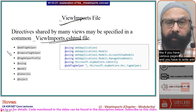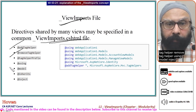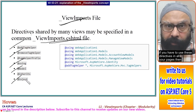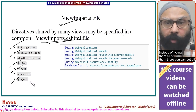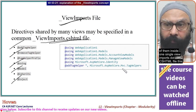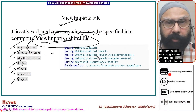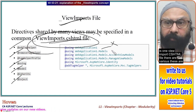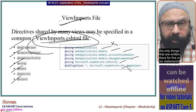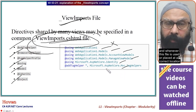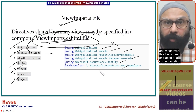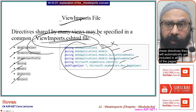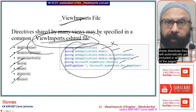If you have various pages and you have to write add tag helper, remove tag helper, using model, inject — if you have to use these directives in all your pages, then instead of typing them everywhere, you can put all of them inside one single ViewImports.cshtml file. And whenever this file is placed at the correct location, these directives will automatically get included in all of the pages.